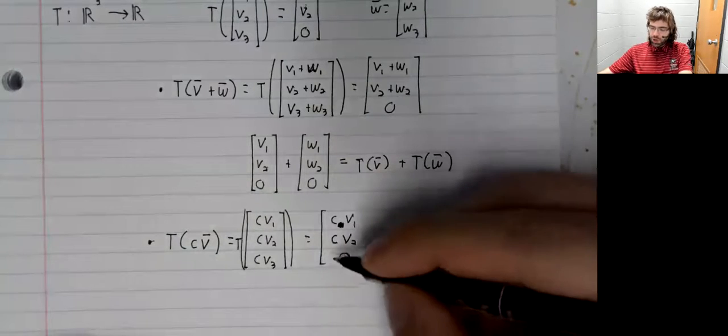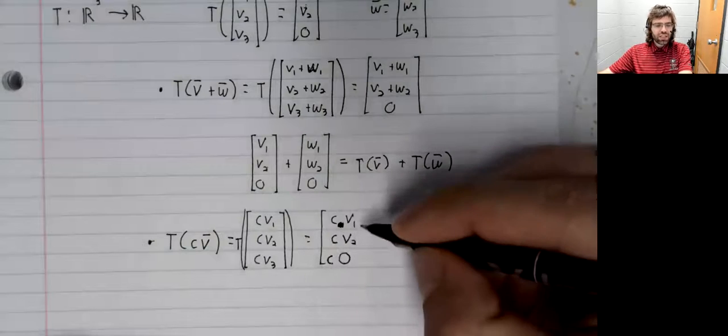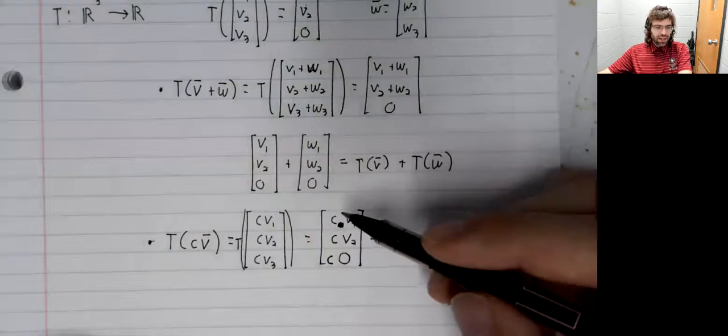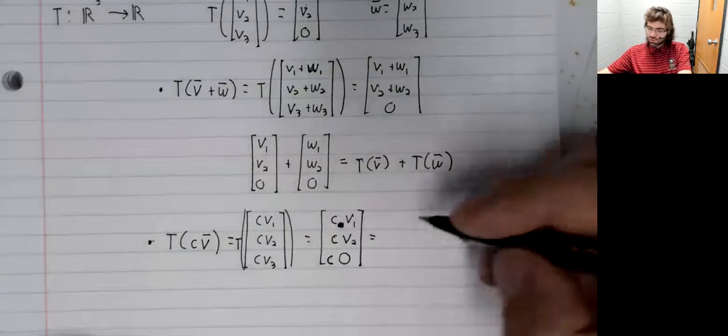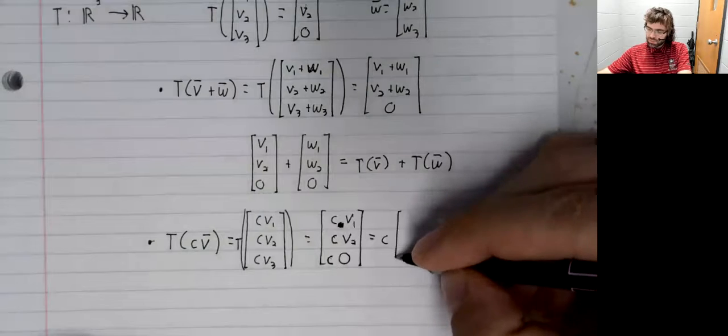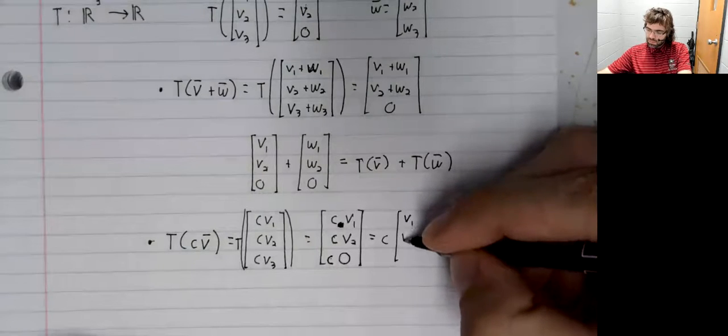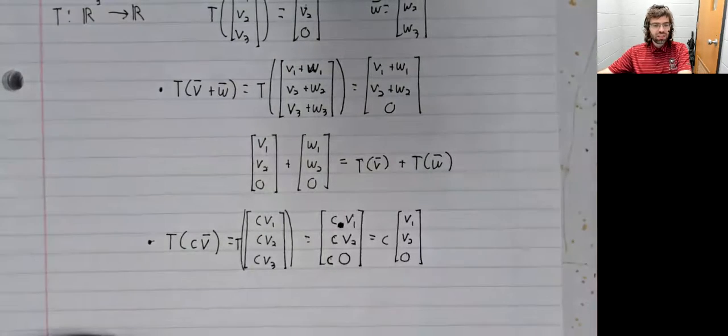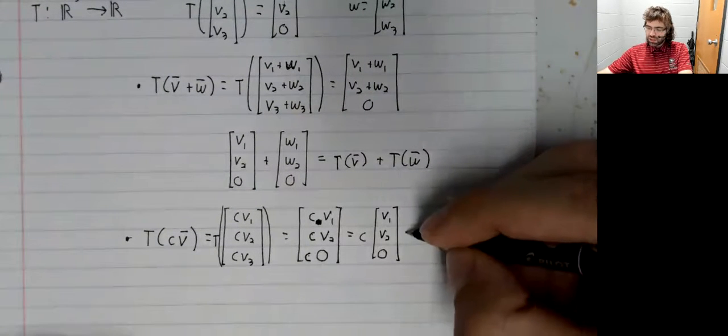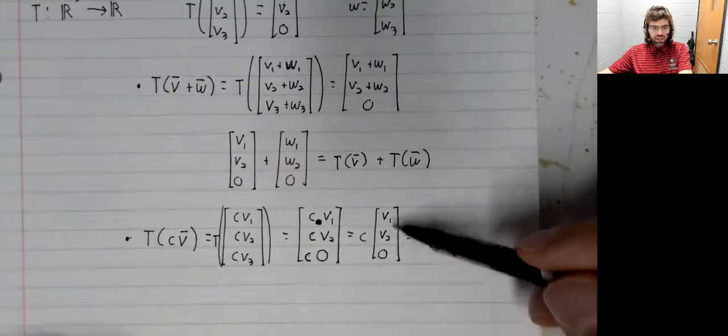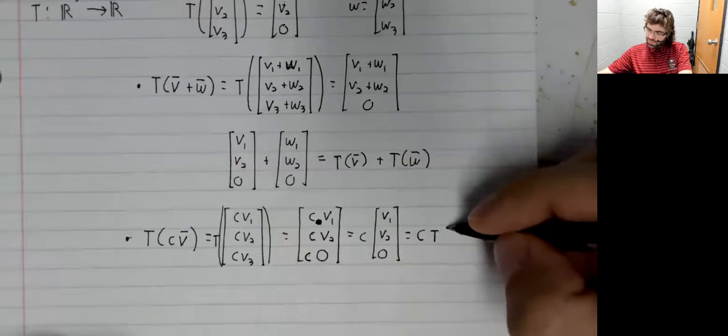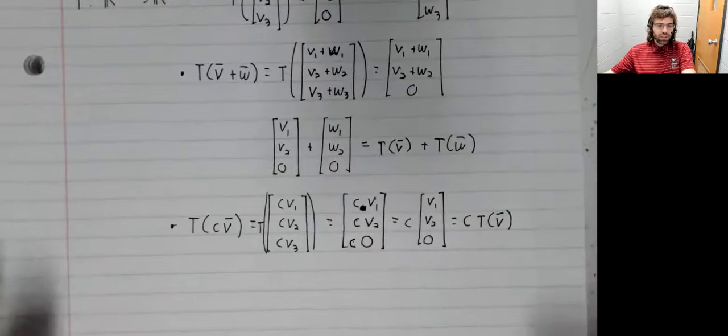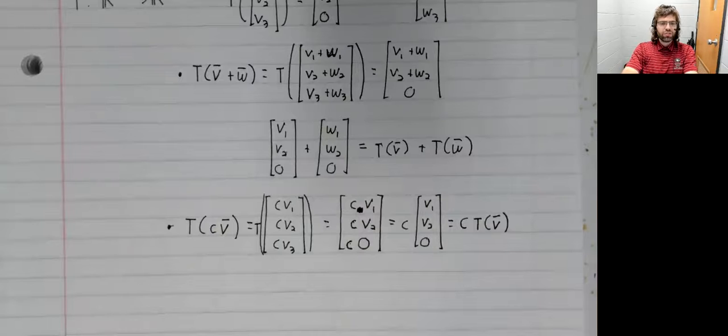The result has zero in the third position. But zero is c times 0. So we have a c in all three of these rows. We can therefore pull a c out of this vector, and this is T of v. So this is a linear transformation.